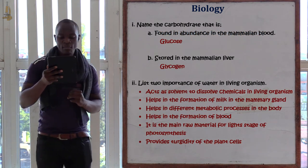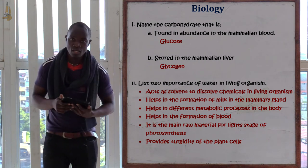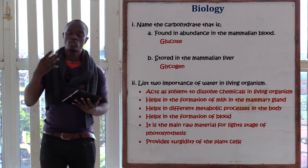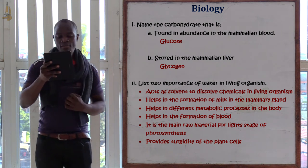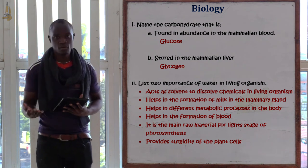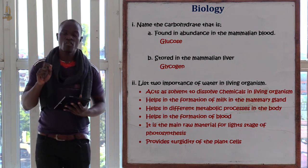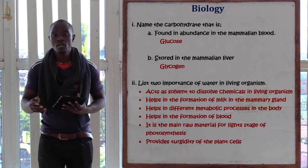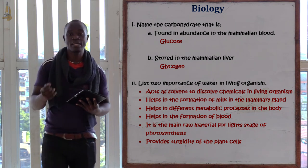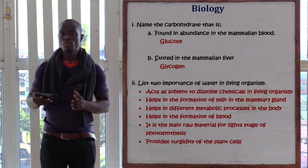The carbohydrate found in abundance in mammalian blood is glucose, which is supplied to the mitochondrion to produce energy. The carbohydrate stored in the mammalian liver is glycogen — excess glucose is stored as glycogen. For plants, carbohydrate is stored as starch.